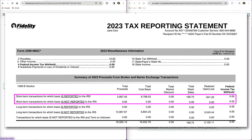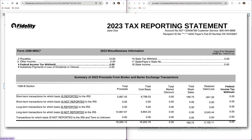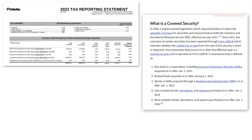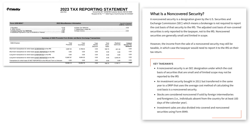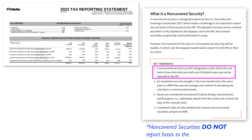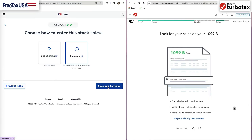Notice two lines for the short and long-term totals — ones that have bases reported to the IRS and ones where bases are not reported to the IRS. Bases reported to the IRS means that the broker has electronically reported your purchase price to the IRS. If it says that it doesn't report the basis, it means that the broker didn't send that information to the IRS, or that the security was acquired prior to 2011, when it was not mandatory to do so.